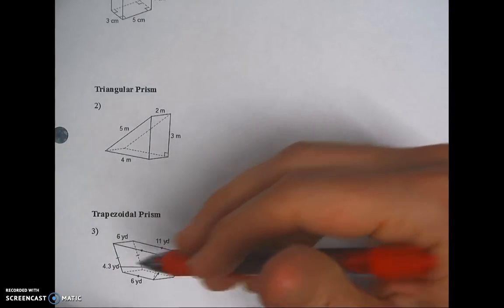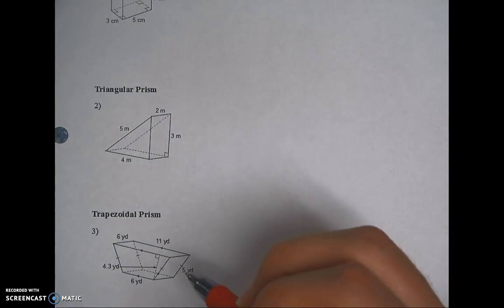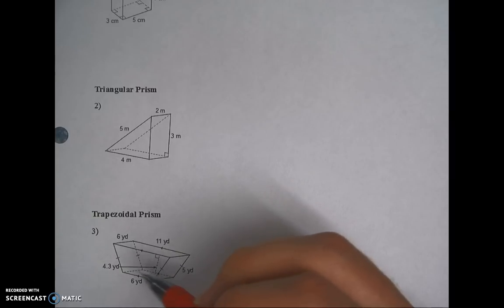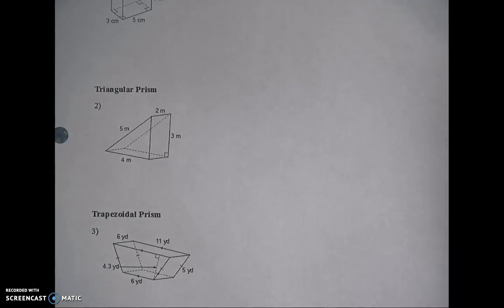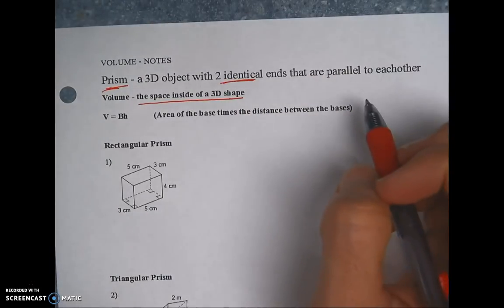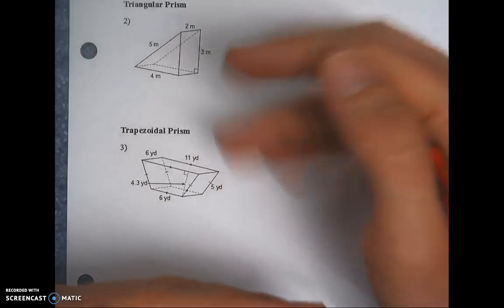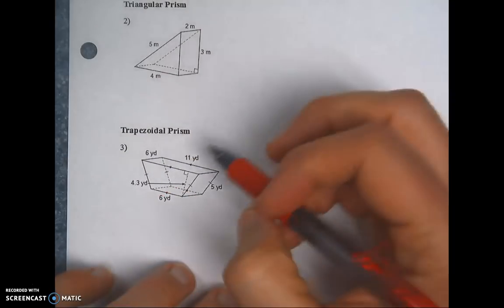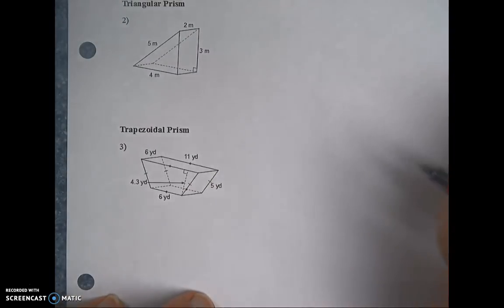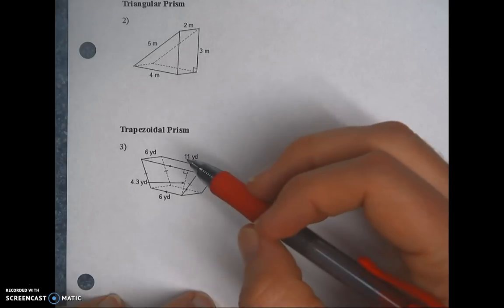The trapezoidal prism has all these sides, but the only two that are parallel and going the same direction are the trapezoids — they are also identical. The top and bottom rectangles are parallel to each other, but they have to be identical to make it a prism. In this trapezoidal prism, the bottom rectangle is much smaller than the one on top, so they can't be considered the bases.